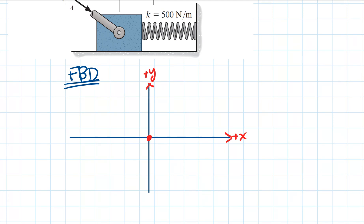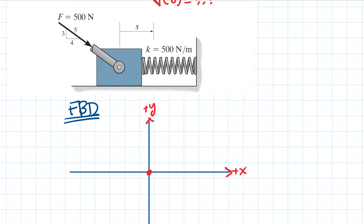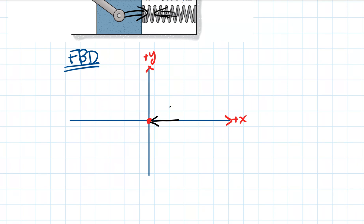Next, we draw the free body diagram. We draw the x and y axes, where the x-axis is parallel to the surface and the y-axis is perpendicular. The block is moving in the positive x direction, so the spring force will be opposite — acting to the left. The spring force equals the spring constant k times the displacement s.